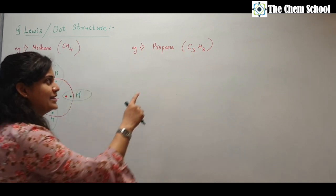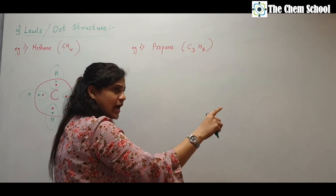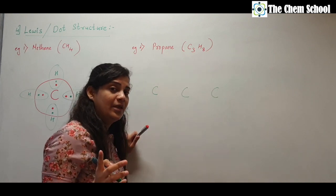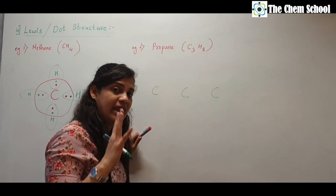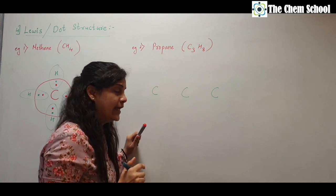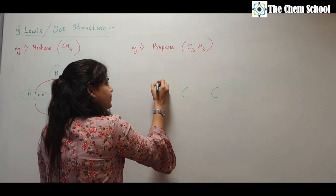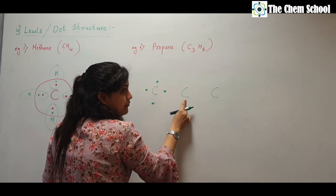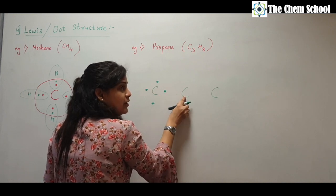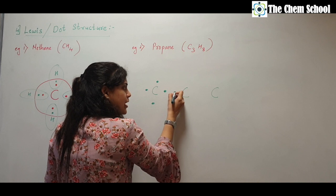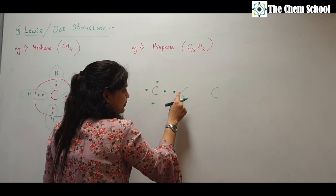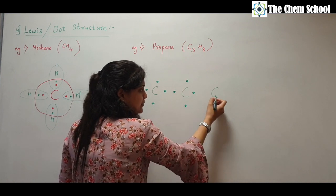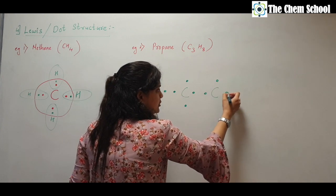Let's take the second example for Lewis structure: propane. Write down three carbons. Each carbon has four electrons in the valence shell — show those four electrons. A bond forms between adjacent carbons, with one electron contributed from each. Show the remaining electrons: this carbon has one, two, three, and four electrons; similarly for the middle and last carbon.